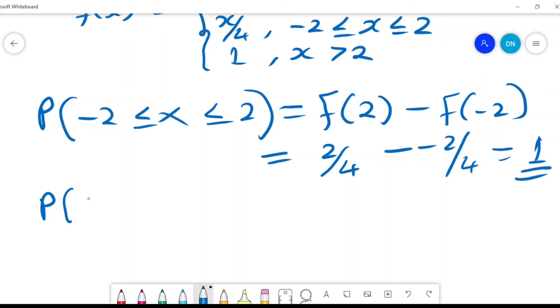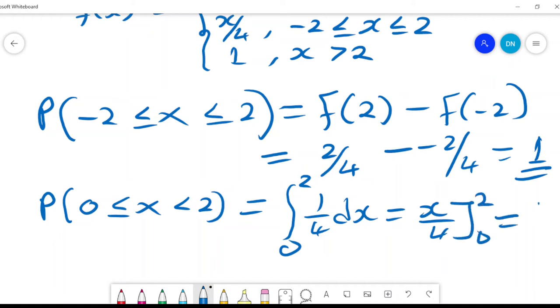In most cases, if I was to get the probability of X lying between 0 and 2, what I would do is the integral from 0 to 2, a quarter dx, which is X over 4, and the answer would be a half. That one I could do.